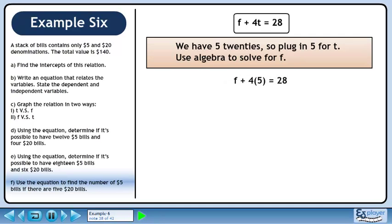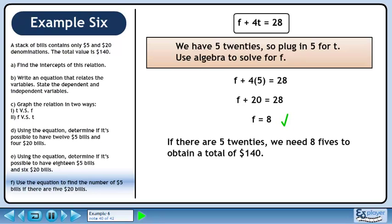Plug in 5 for t. This gives f plus 20 equals 28. Subtract 20 from both sides to get f equals 8. If there are 5 20s, we need 8 5s to obtain a total of $140.